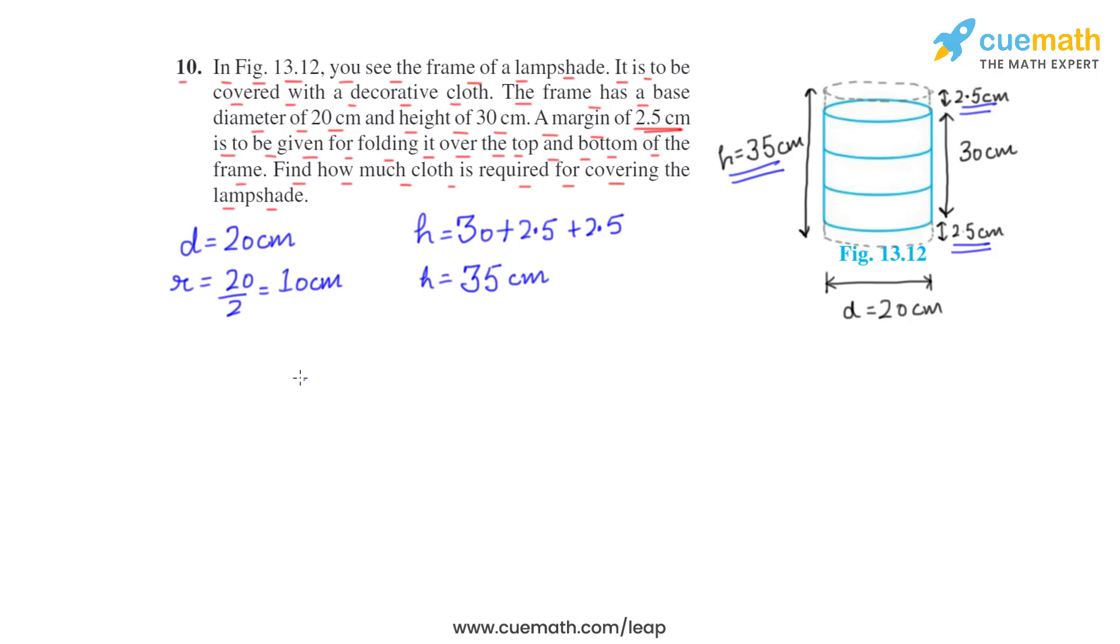Now, we have to find area of the cloth required, as area will be on the curved surface part. So, area of the cloth will be nothing but the curved surface area. So, we know that the formula of curved surface area is 2 × π × r × h.